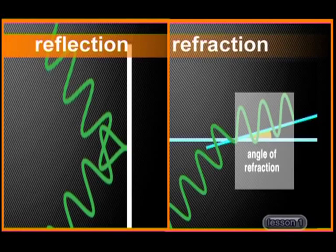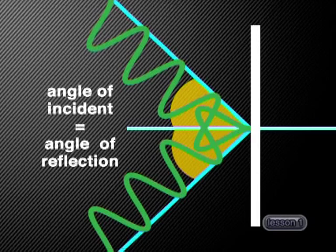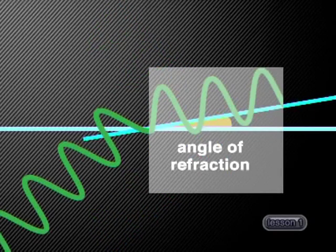Now let's use the ripple tank to see if 3D waves behave in the same way as 2D waves when they reach a boundary. You should remember that a 2D wave can either be reflected or refracted when it reaches a boundary. If the wave is reflected, it will always obey the law of reflection, which says that the angle of incidence is always equal to the angle of reflection measured from the normal. Refraction takes place when the speed of the wave changes as it enters a new medium. This change of speed will cause the wave to bend if it meets the boundary at an angle of incidence greater than 0 degrees.